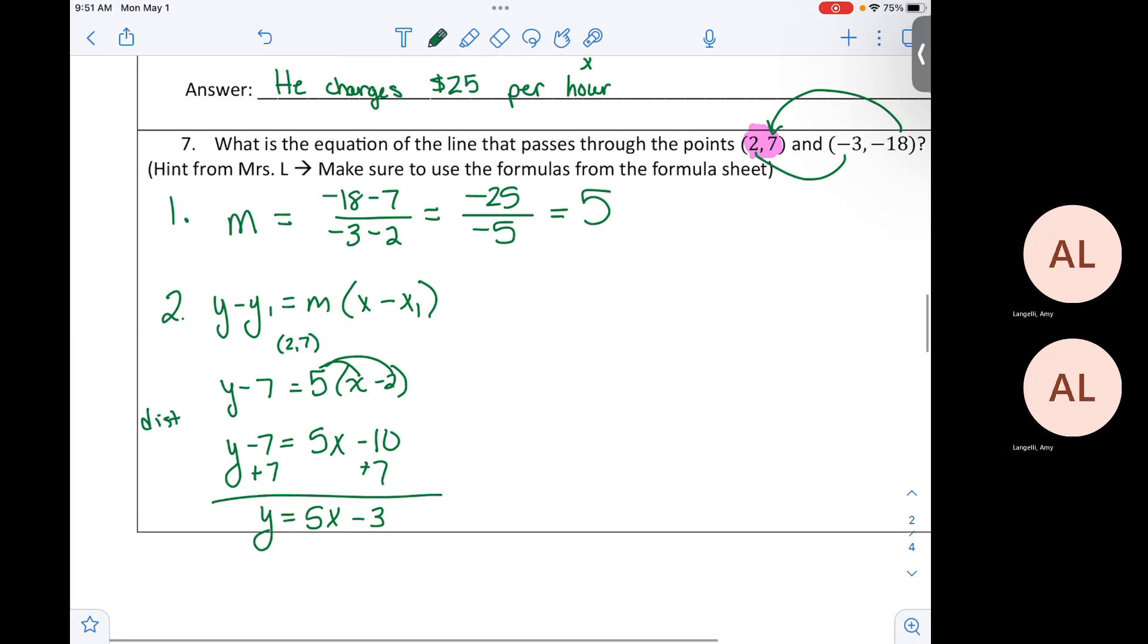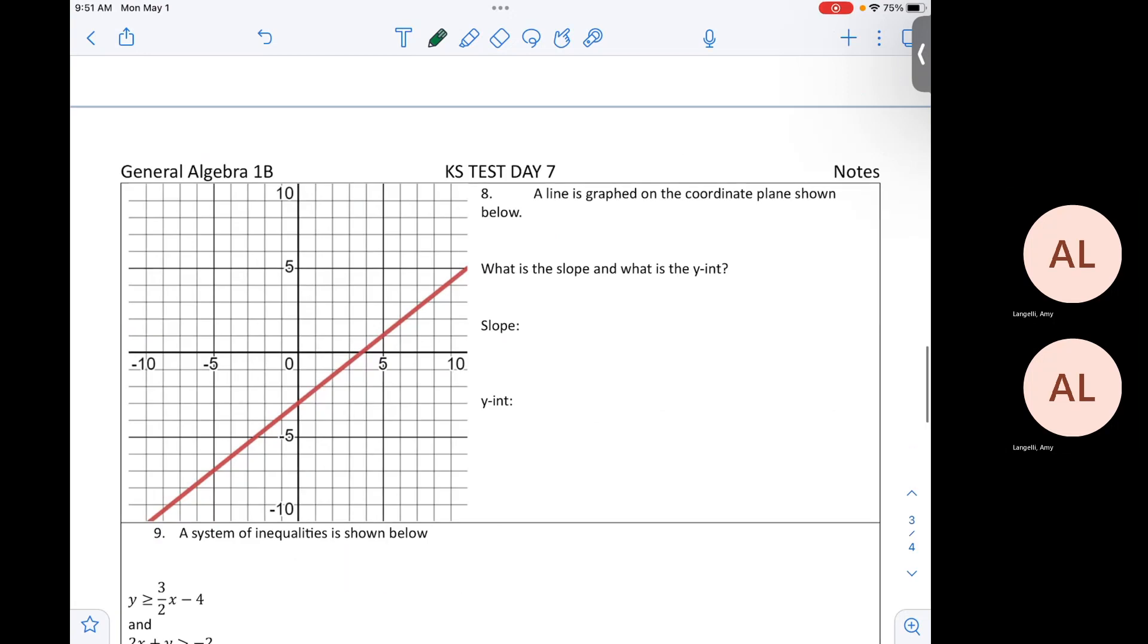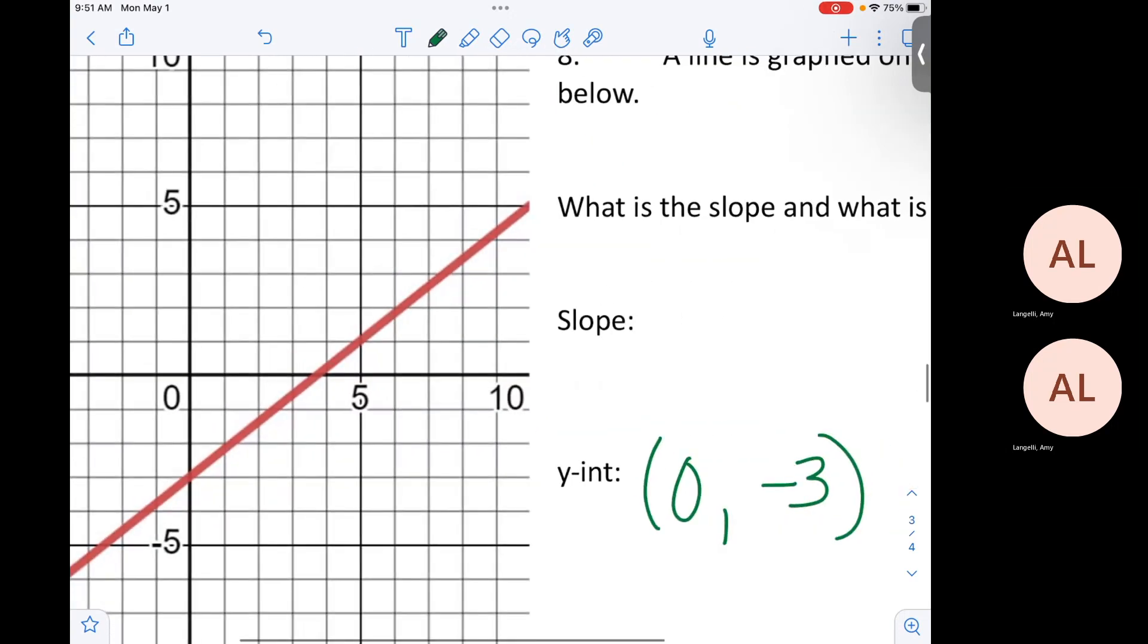Do you guys want to learn how to use your calculator to do these or not? Your calculator will do all of that for you and give you the equation. Are you interested in learning or not? I don't sense any interest, so we'll move on. A line is graphed in the coordinate plane shown. What is the slope and what is the y-intercept? My intercept is zero, negative three. What's the slope?